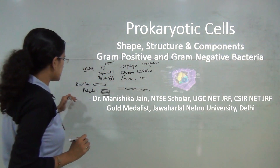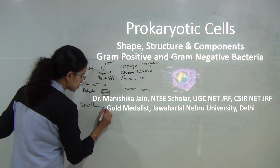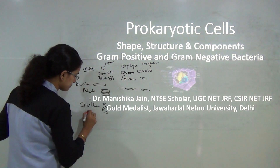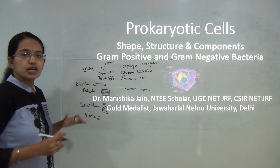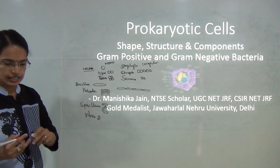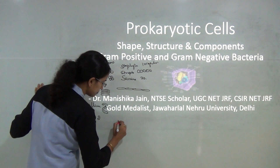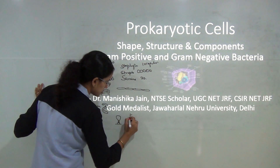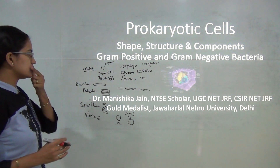The next shape is spirillum — a corkscrew-shaped bacteria. The next is vibrio, which is a comma-shaped bacteria. These are some of the common shapes of bacteria. Finally, you have the stalked bacteria that is attached to the ground, and the budded type where one cell is further divided into subdivisions.